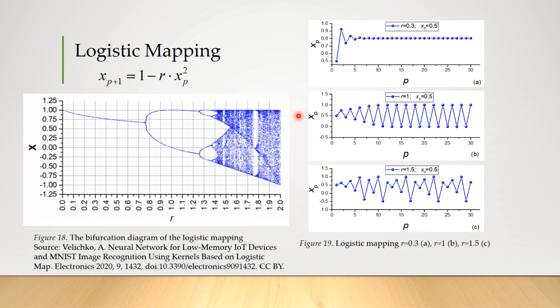For example, at R equal 0.3, the sequence comes to one value, at R equal 1, two values alternate, and at R equal 1.5 we observe a series of chaotic numbers. This sequence is called a deterministic chaos, so they are not random, but are calculated by the equations.